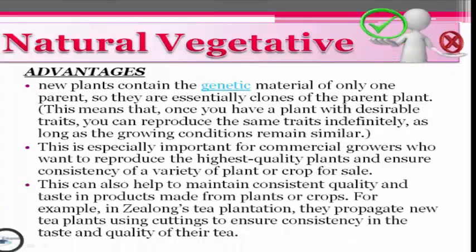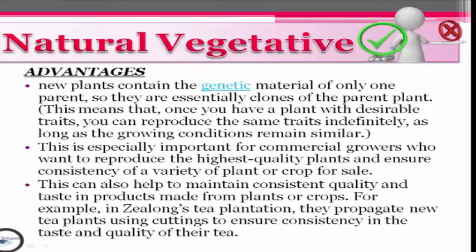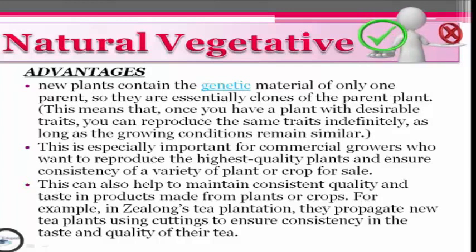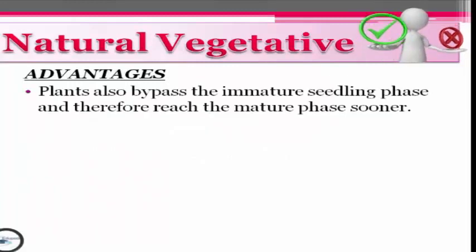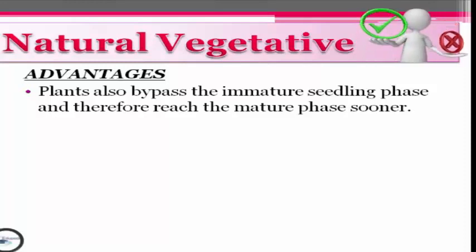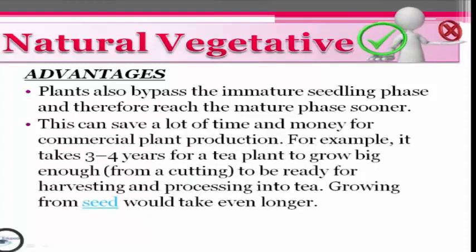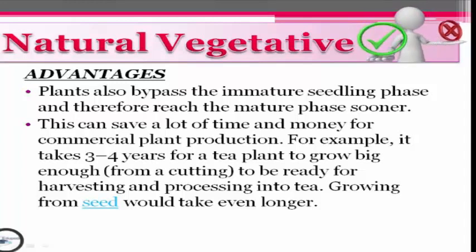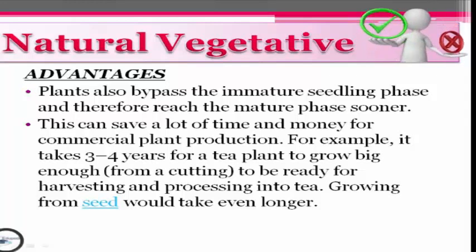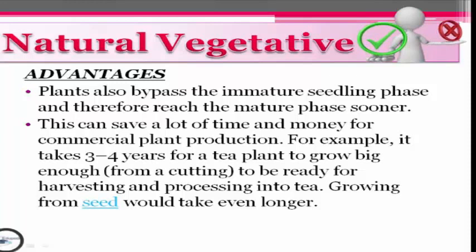This can also help to maintain consistent quality and taste in products made from plants or crops. For example, in Zilong Tea Plantation, they propagate new tea plants using cuttings to ensure consistency in the taste and quality of their tea. Another advantage is that plants bypass the immature seedling phase and therefore reach the mature phase sooner. This can save a lot of time and money for commercial plant production. For example, it takes 3 to 4 years for a tea plant grown from a cutting to be ready for harvesting and processing into tea, whereas growing from seed would take even longer.